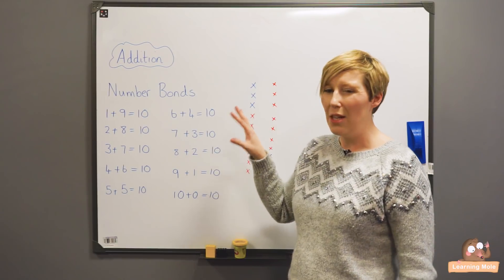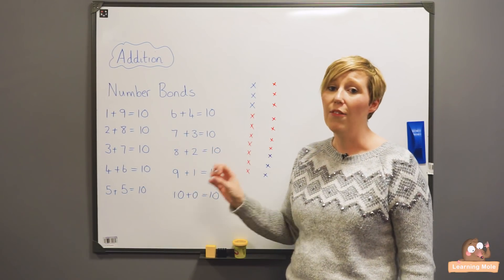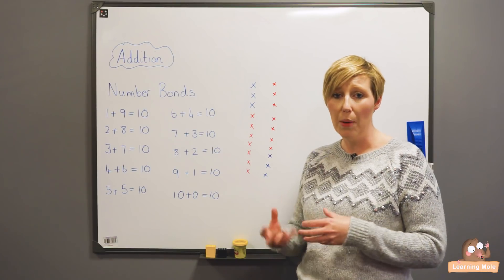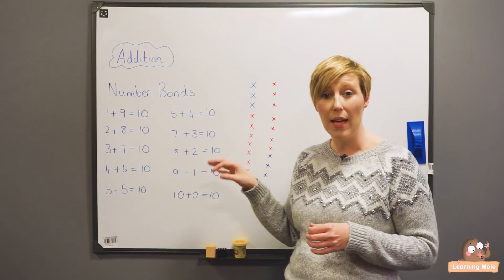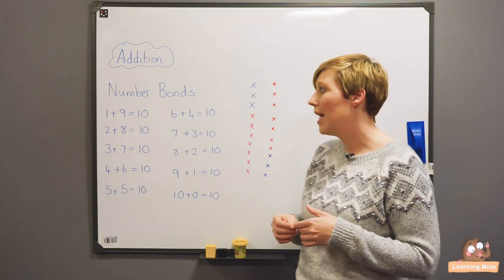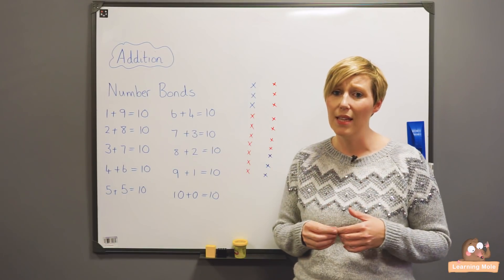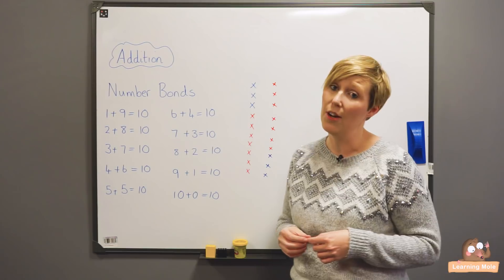So just the number bonds I would say are really key. Keep practicing them and think of fun alternative ways to practice them rather than just writing them out, and drawing pictures is also a nice way of exploring them. But as I do say, they're really, really key. And I would say that they do really need to be focused on and children really do need to learn them.